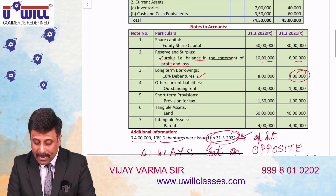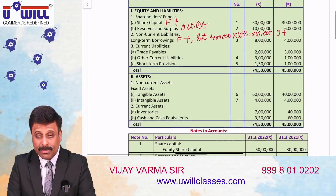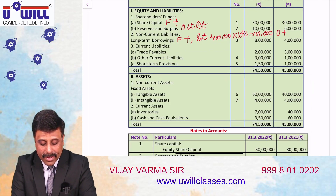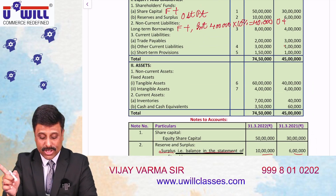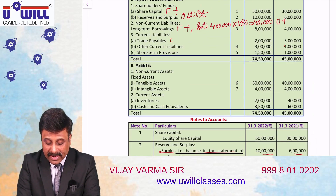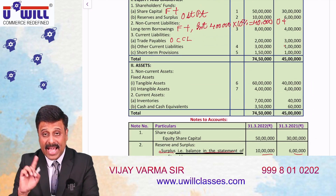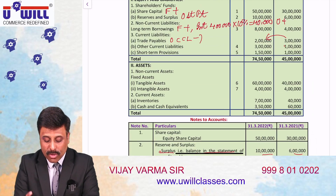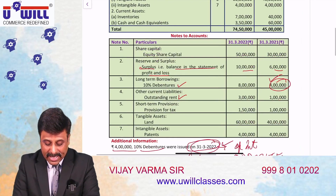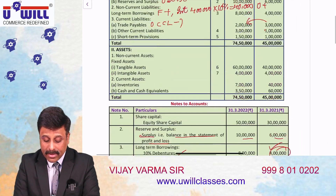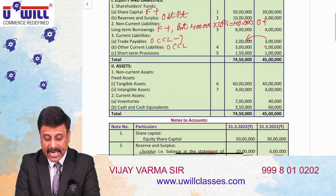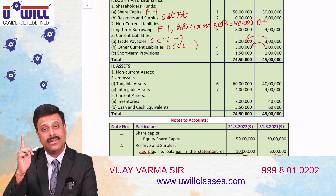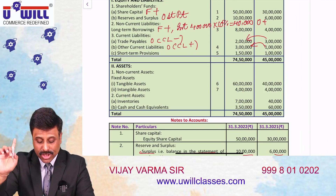Trade payables: 3 lakhs opening, 2 lakhs closing — decreasing by 1 lakh. Current liabilities have direct relation, so decreasing means we subtract — CL−. Other current liabilities includes outstanding rent: 1 lakh opening to 3 lakhs closing — increasing by 2 lakhs. Current liabilities, direct relation, increasing means we add — CL+.